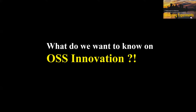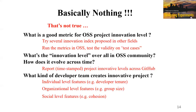So what do we want to know about OSS innovation? We have three questions. First, what is a good metric for OSS project innovation level? This is the major question I want to answer. The plan is I already have several innovation indices proposed in other fields, and I want to run those metrics on OSS and test whether they are valid. I have several sets of test cases — projects we have a general understanding about — and I want to run those metrics to test whether the measured results meet our expectation. Second, what is the overall innovation level in the OSS community and how does it evolve across time? Since I already have the metrics from question one, I can run those against all projects at different times and report the overall level and how it evolves.